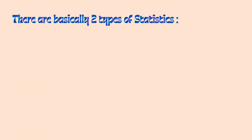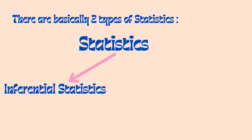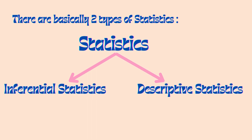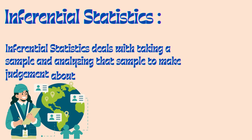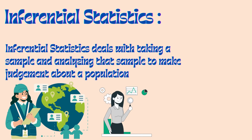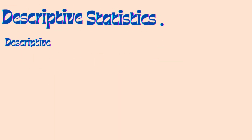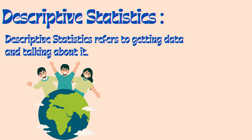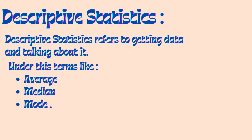There are basically two types of statistics. The first is inferential statistics and the second is descriptive statistics. Inferential statistics deals with taking a sample and analyzing it to make judgments about a population, whereas descriptive statistics refers to getting data and describing it using terms like average, median, and mode.